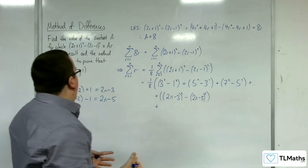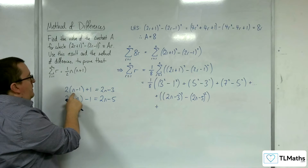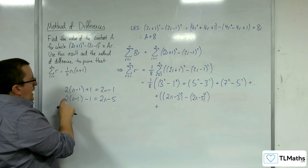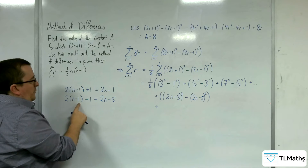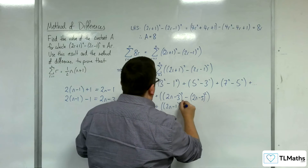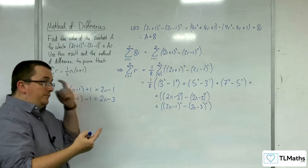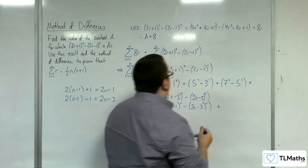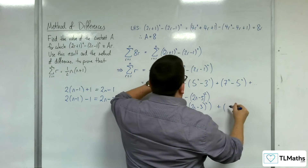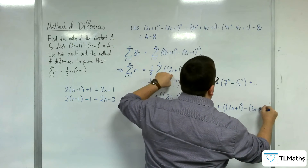Then substituting in n−1: we get 2n−2+1, so take away 1, giving (2n−1)² take away (2n−3)², so we can see those terms are going to cancel. And the very last term, substituting in n, we're going to have (2n+1)² take away (2n−1)².